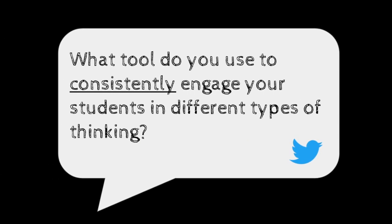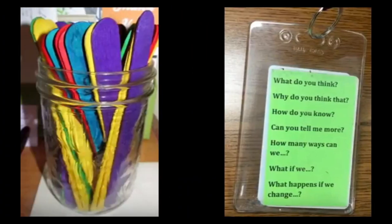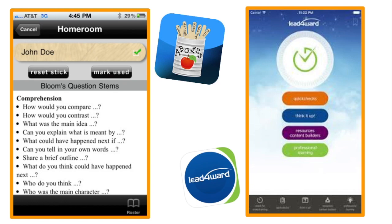Your Level Up Challenge for this week is: what tool do you use to consistently engage your students in different types of thinking? You can do the traditional popsicle sticks in a cup with question stems or specific questions for your class, or carry around a list of questions — this one is in a teacher's badge, which is a great idea. Or you could have a flip ring of question stems available in your pocket, on your podium, or somewhere in your classroom within easy reach.